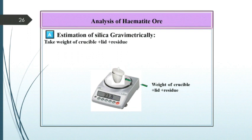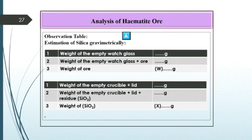Observation table for Part A, estimation of silica gravimetrically: weight of the empty watch glass, weight of the watch glass plus ore, weight of the ore W gram, weight of the empty crucible plus lid, weight of the crucible plus lid plus residue, weight of the silica as X gram.